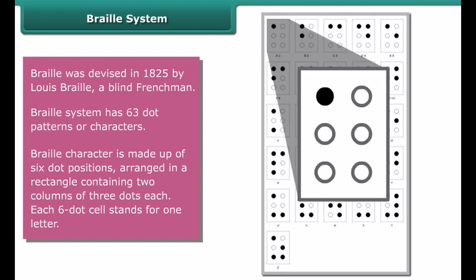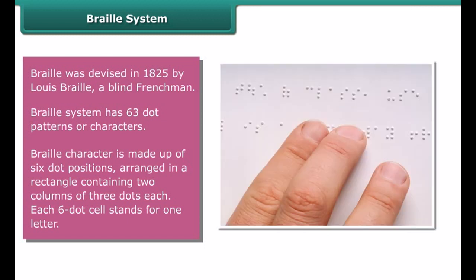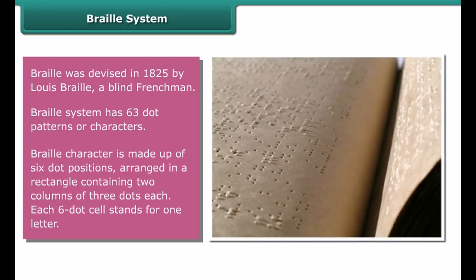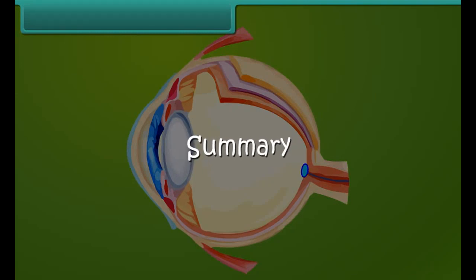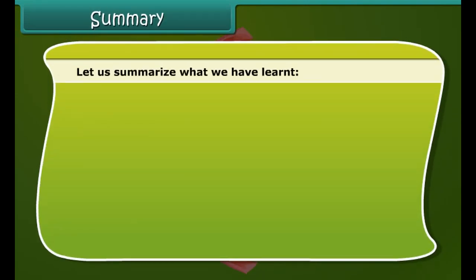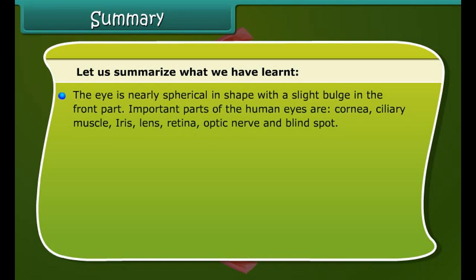Braille was devised in 1825 by Louis Braille, a blind French man. Braille is a writing system which enables blind and partially sighted people to read and write through touch. The Braille system has 63 dot patterns or characters. Each character is made up of six dot positions arranged in a rectangle containing two columns of three dots each. Each character represents a letter, a common word, or a grammatical sign. Visually challenged people learn Braille by beginning with letters, then special characters and letter combinations.